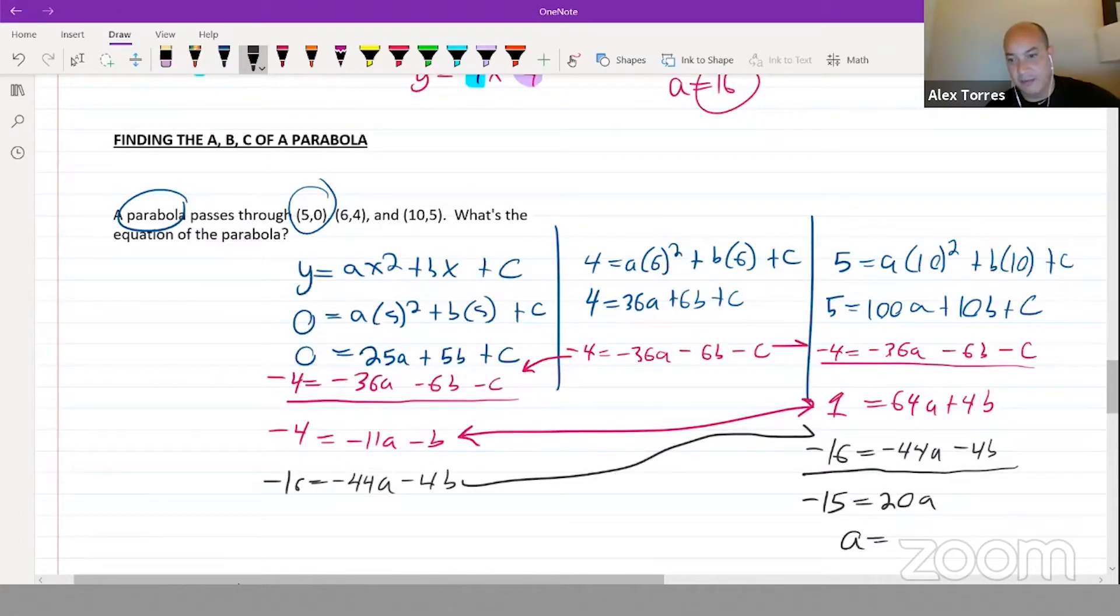And we finally have one of the answers: a equals 15 divided by 20, which is negative four thirds. So knowing that a is negative four thirds, you can plug that back into either of your equations that have two variables.